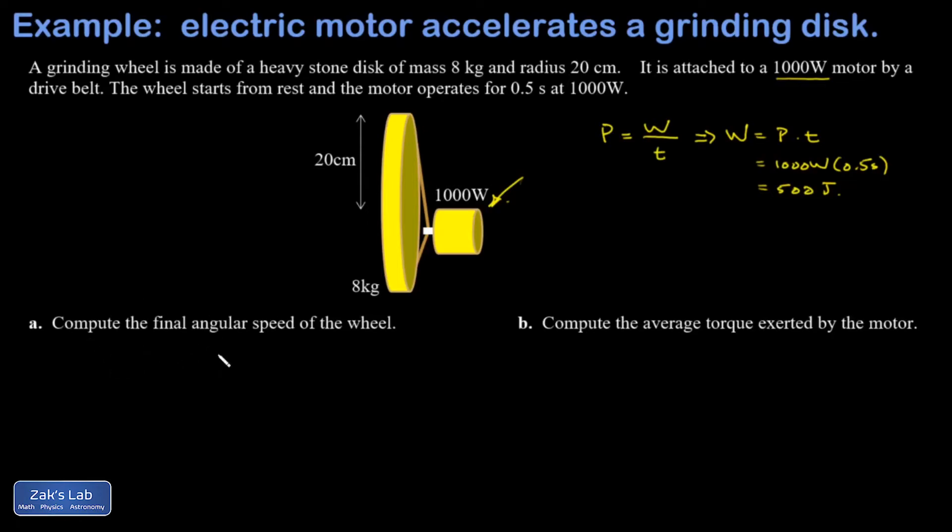In part A, I want the final angular speed of the wheel. So I have to use my expression for the rotational kinetic energy of an object in pure rotation, and that's one half I omega squared. Just to keep things spaced out a little, I think I'm going to compute the moment of inertia of this grinding wheel separately. And for a solid disk, you have to look up the formula for it, and it's one half m r squared.